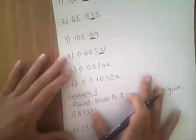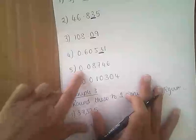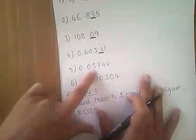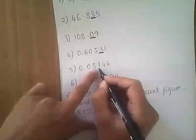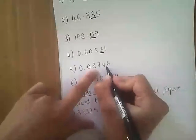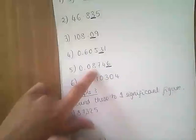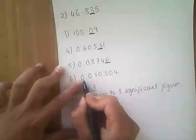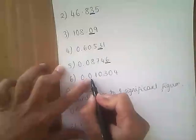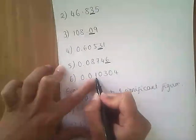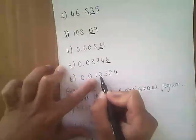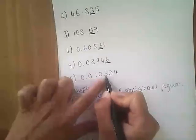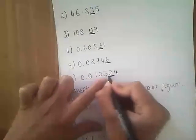Number five: that zero doesn't count, that zero doesn't count — that's our first significant figure. Second, third, fourth. And again here, that zero doesn't count, that doesn't count. That's our first significant figure. That's our second because it's after another number. That's our third. This is our fourth.